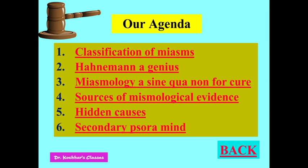We have to remember that somehow Hahnemann's dictum — that 7/8ths of chronic diseases are caused by psora — has been washed away. Now what we hear, what we read, and what our teachers tell us is that hardly there are psora cases now and most cases are syphilitic and sycotic. That concept is not in tune with Hahnemann; we have to consider that aspect also.